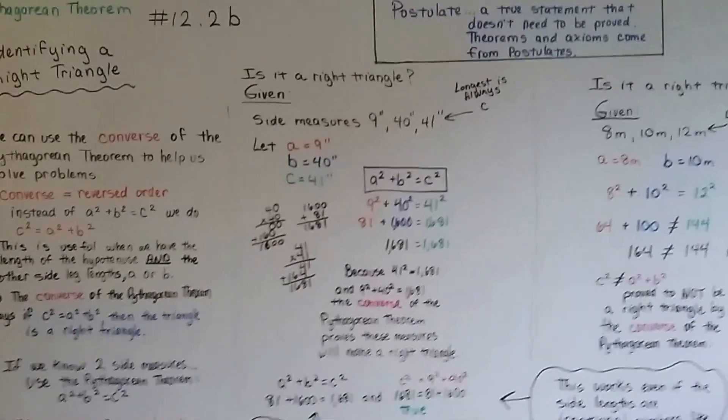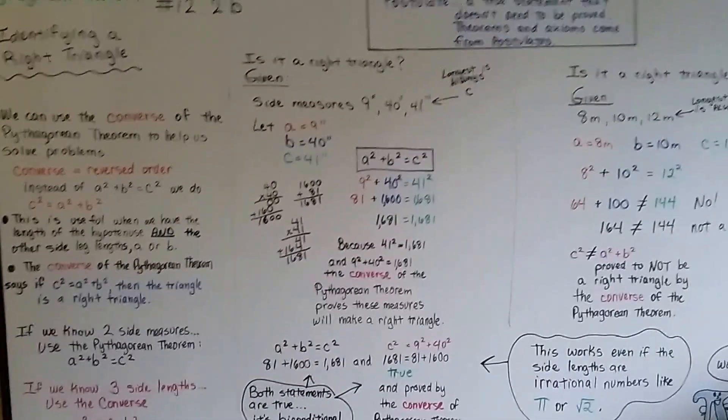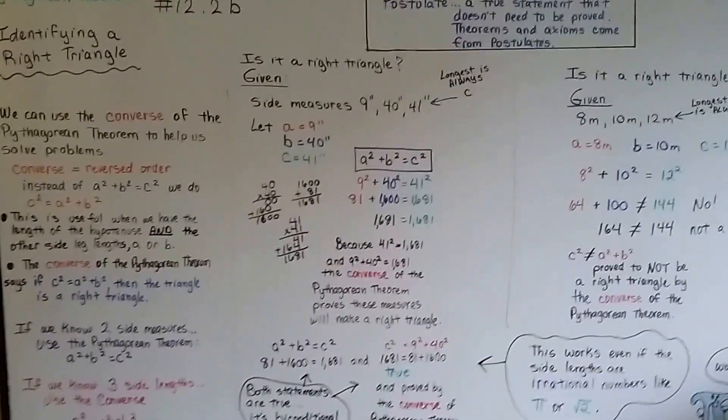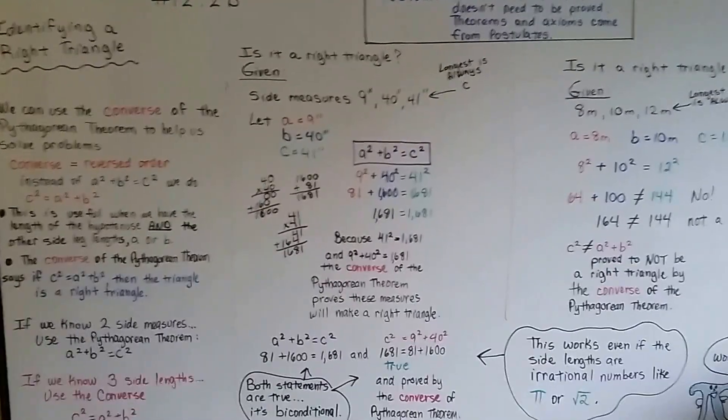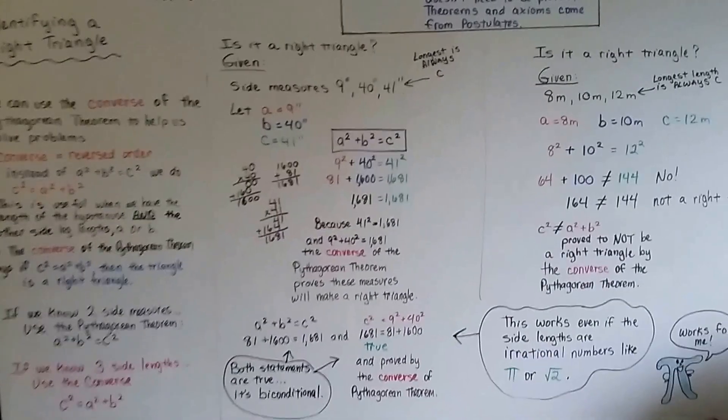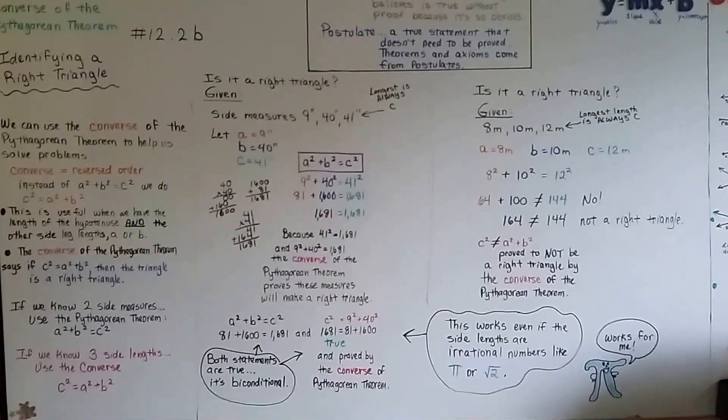So that was identifying a right triangle. In our next video, 12.2c, we're going to talk about using the converse of the Pythagorean theorem to solve a real-world problem, a real-life problem. So we'll show you how this can really work in real life. I'll see you there. Bye!